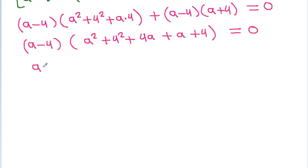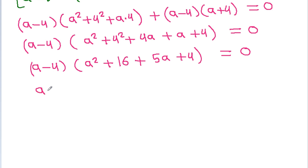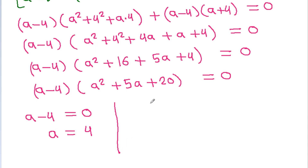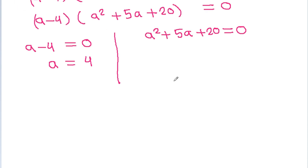Simplifying inside the bracket: a² + 4a + 16 minus a minus 4 gives a² + 3a + 12... so we get (a minus 4) times (a² + 5a + 20) is equal to 0. Therefore either a minus 4 equals 0, meaning a equals 4, or a² + 5a + 20 equals 0.